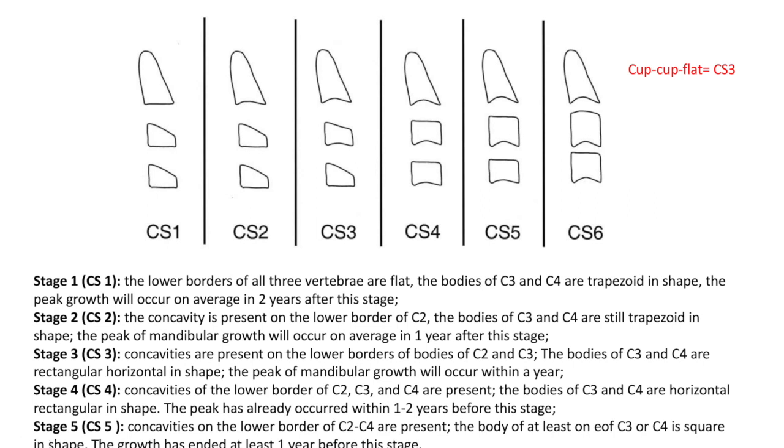This slide reiterates the previous one. The main takeaway is that when we see the patient in cervical stage three, which can be named as concave, concave, flat, it means that there is a lower border of C2 which is concave, the lower border of C3 is also concave, but the lower border of C4 is still flat. This is cervical stage three, which indicates the peak of growth in this individual.